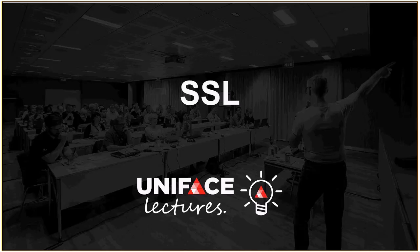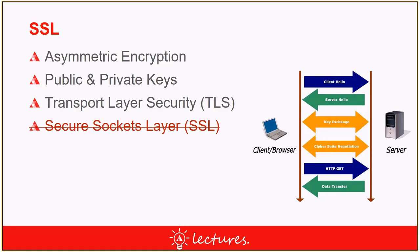The first big-ticket item for securing Tomcat is implementing SSL. This deals with confidentiality and integrity because your data will be encrypted, meaning nobody can intercept the data, read it, or change it. That covers the C and I of the CIA triad. Availability is dealt with in other ways.